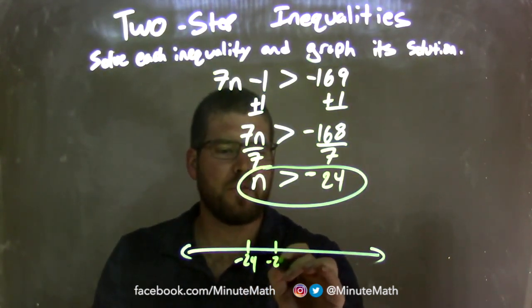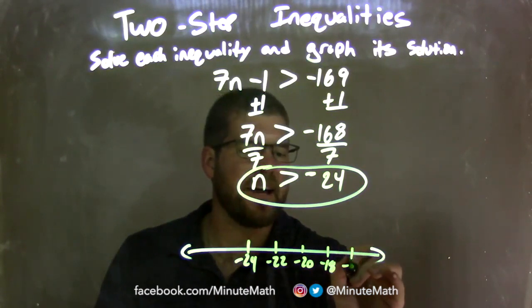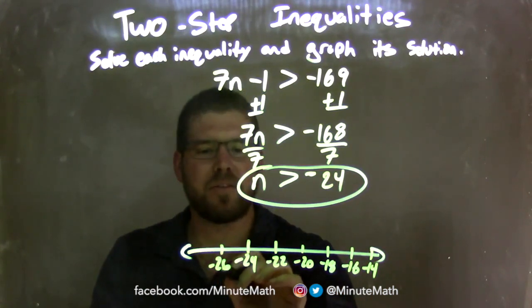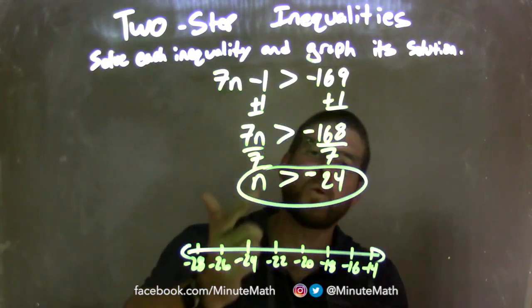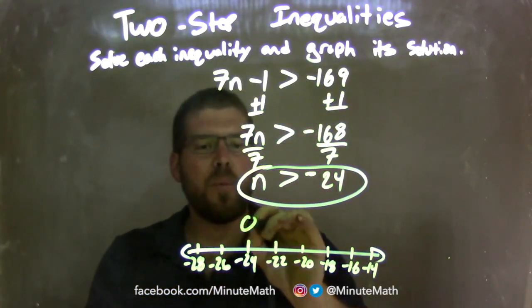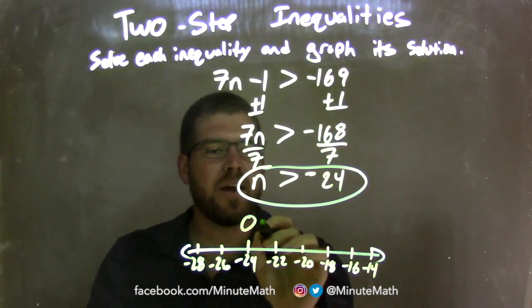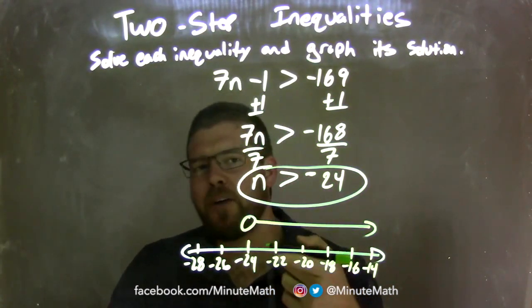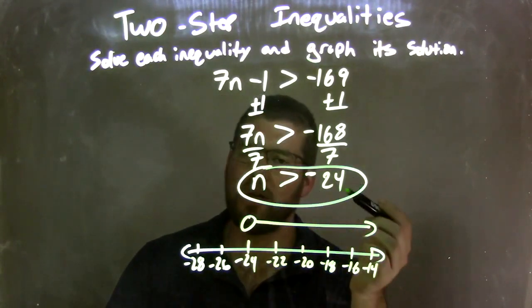Now I need to graph it. Make my number line: negative 24 right there, going by 2s — negative 22, negative 20, negative 18, negative 16, negative 14, and negative 26, negative 28. Since n is greater than negative 24, we put an open circle at negative 24 — it's greater than, so I put my arrow to the right. We have our graph that matches our final answer of n is greater than negative 24.